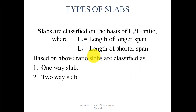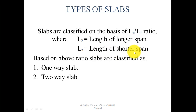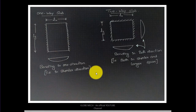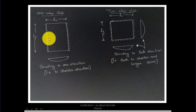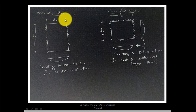Next, types of slabs. Slabs are classified on the basis of the ly by lx ratio, where ly is the length of the longer span and lx is the length of the shorter span. Based on this ly by lx ratio, slabs are classified as one-way slab and two-way slab.